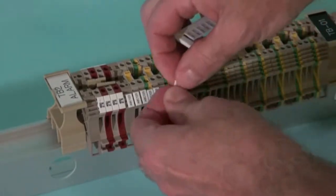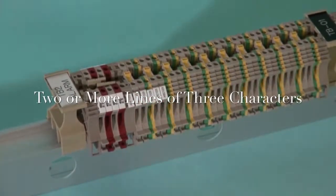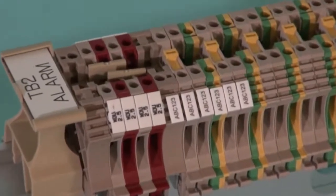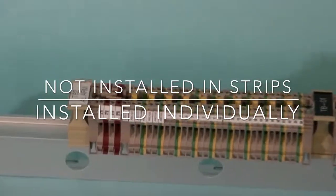In horizontal orientation, the tags will accept 2 or more lines of 3 characters. The WS series multi-card marking tags are not installed in strips, but rather individually.